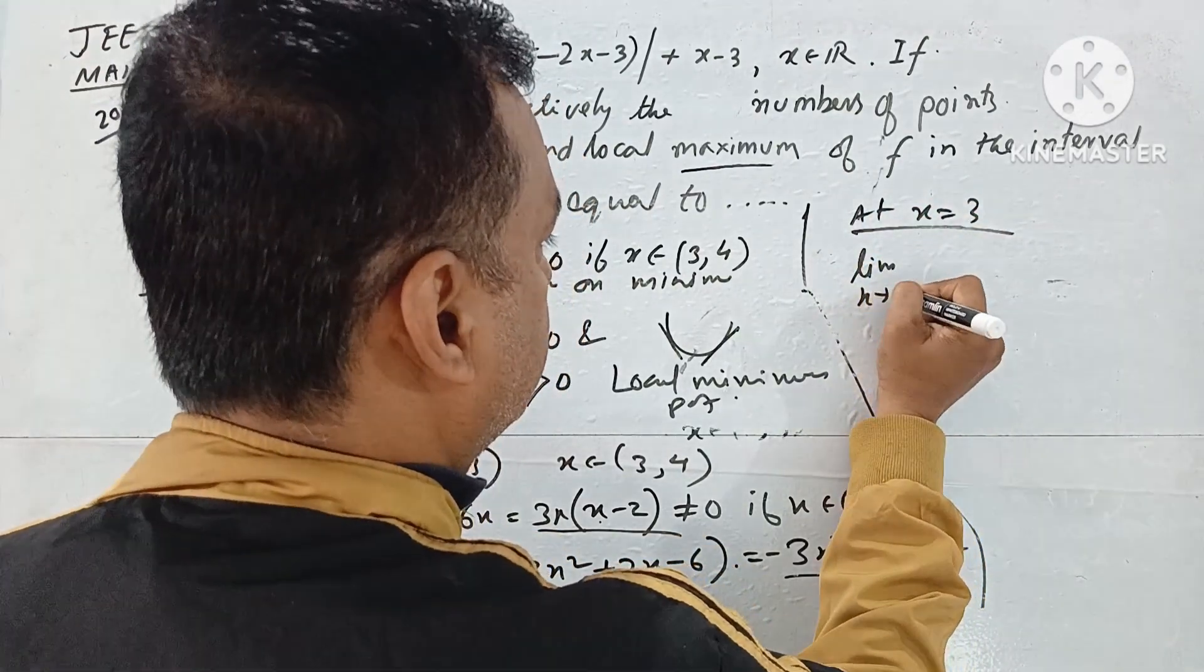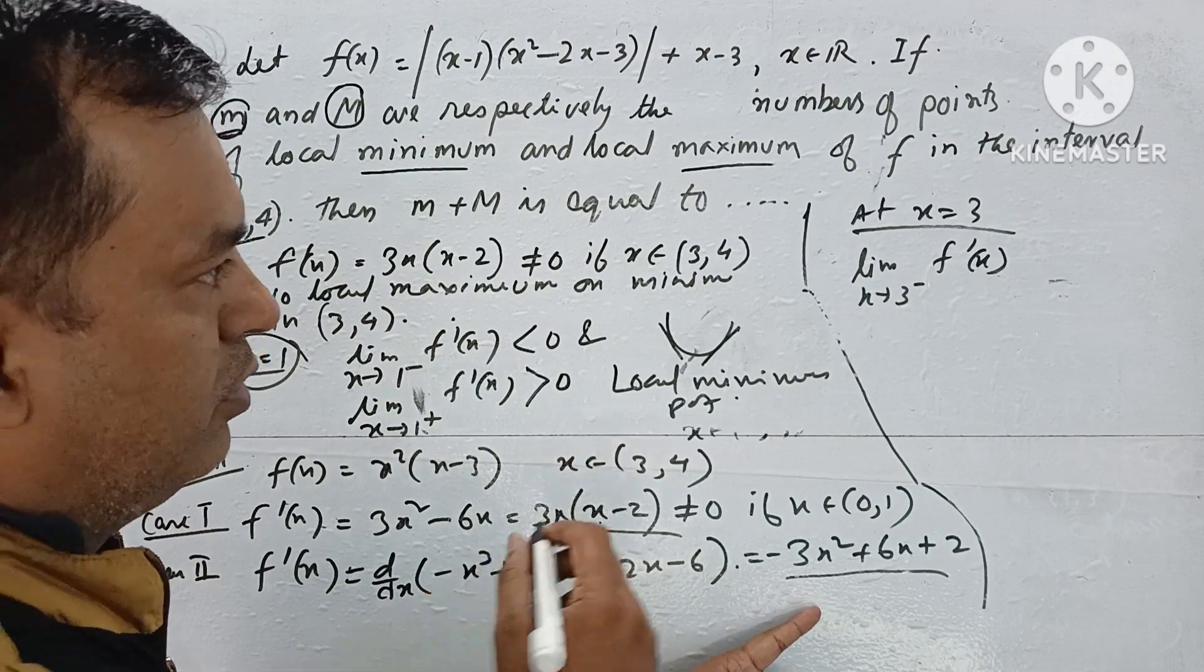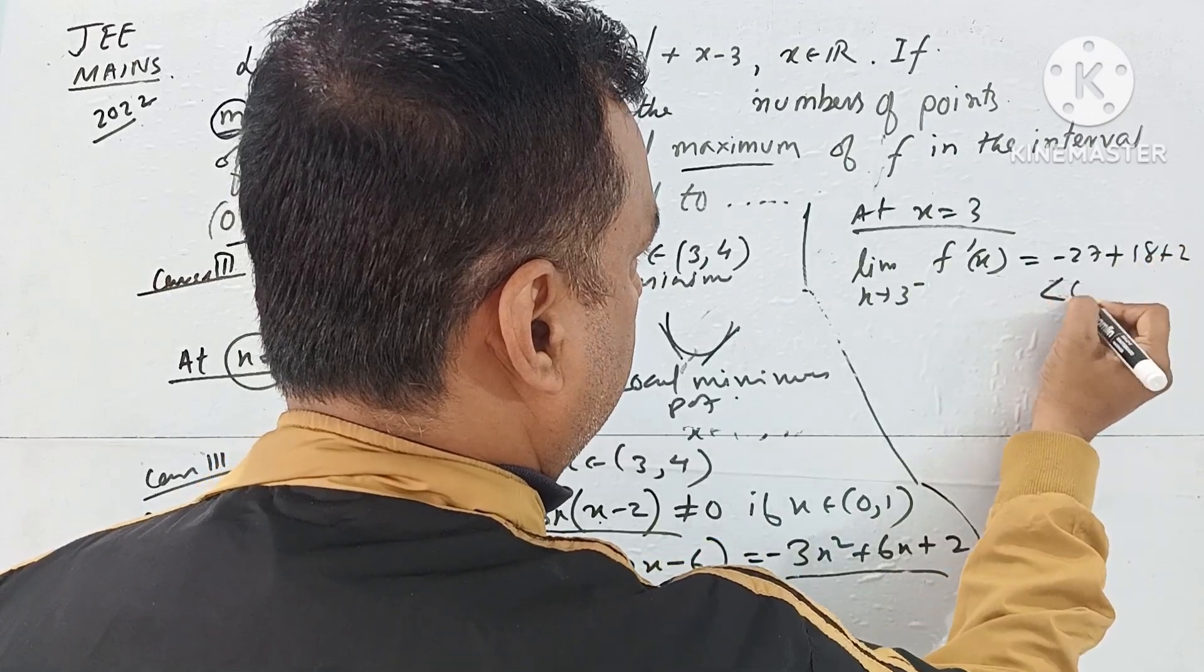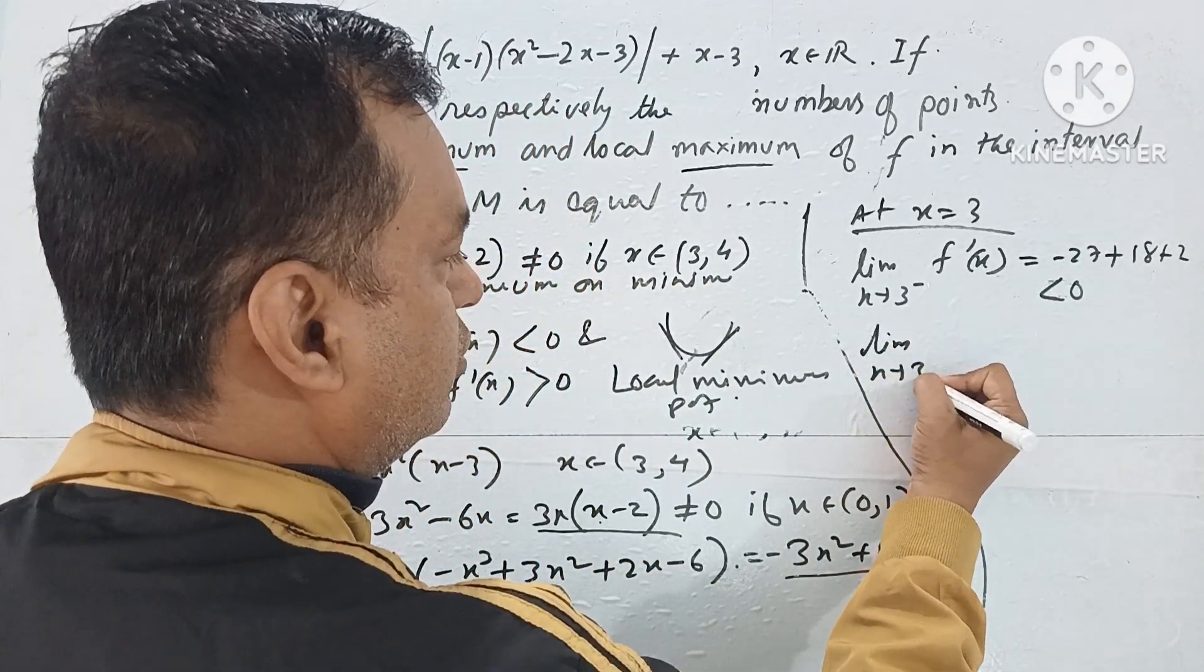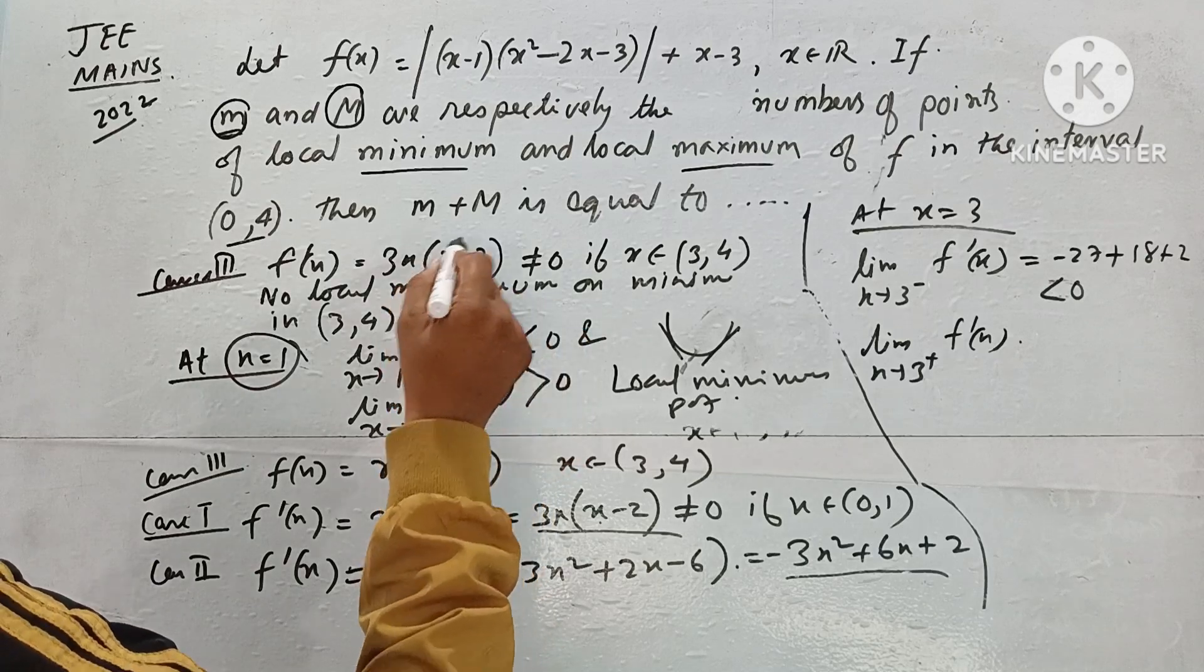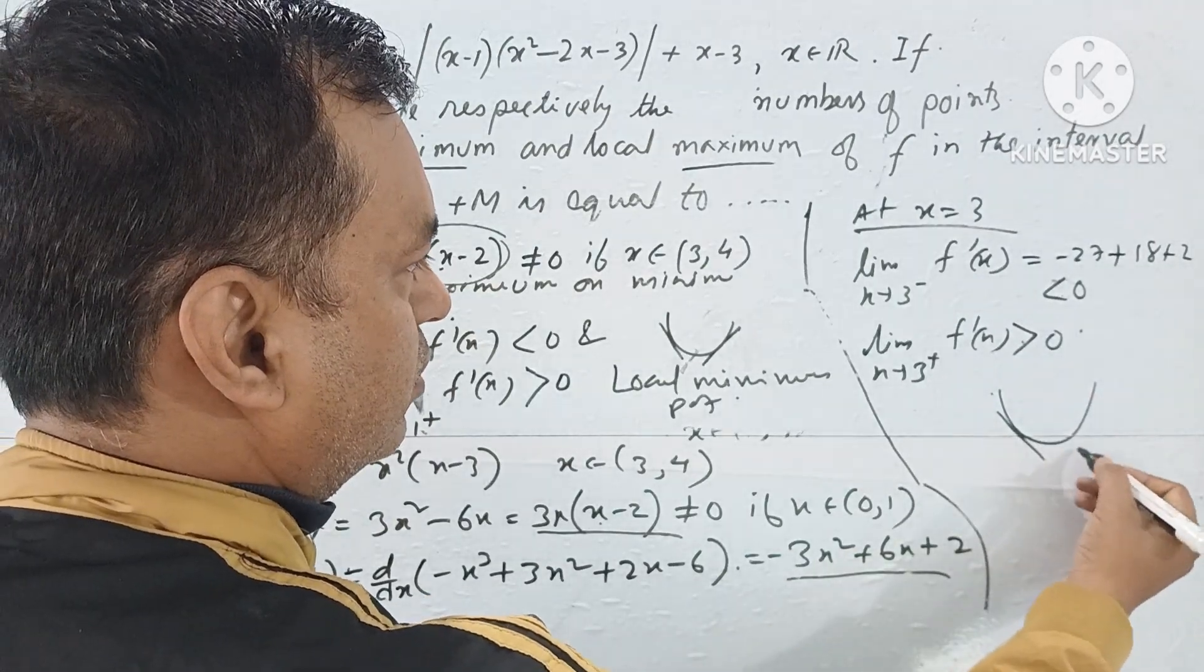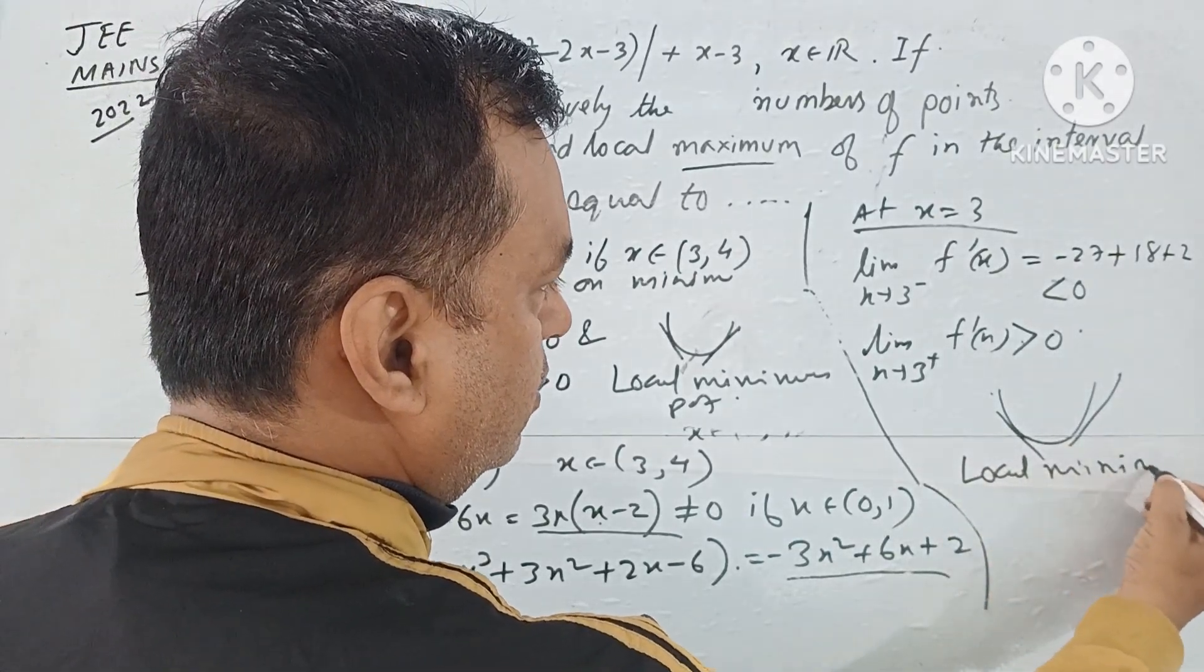At x equal to 3, limit extending to 3 from negative side, f'(x) is less than 0. Limit extending to 3 from positive, f'(x) greater than 0. Negative first, then positive. This is also a local minimum point.